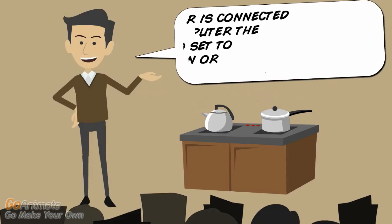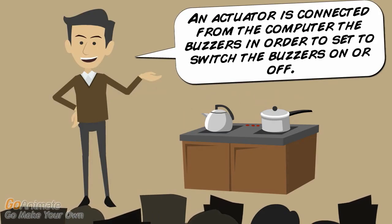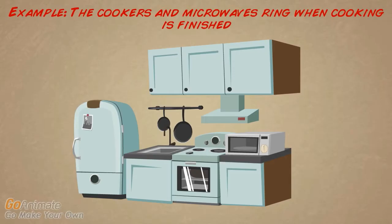Buzzers. An actuator is connected from the computer to the buzzer. The actuator is set to switch the buzzer either on or off. For example, the cookers and microwaves ring when cooking is finished.